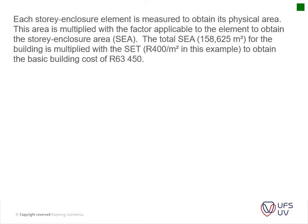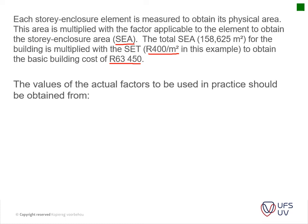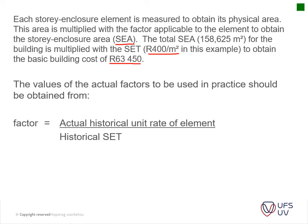Each story enclosure element is measured to obtain its physical area, and that area is multiplied by the factor applicable to the element to give the story enclosure area. The total story enclosure area in this case is 158 square meters, multiplied by 400 rand per square meter to obtain the same result as the previous examples. The value of the actual factor is represented by the formula: historical data rate of the element divided by the historical story enclosure tariff.